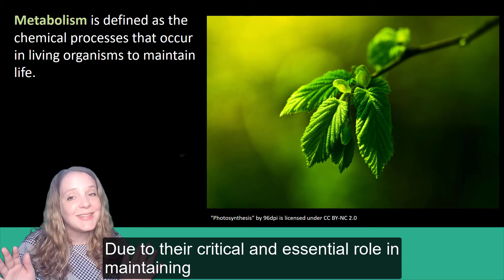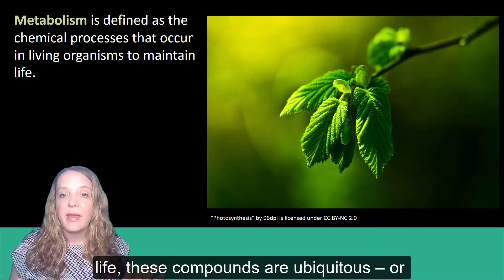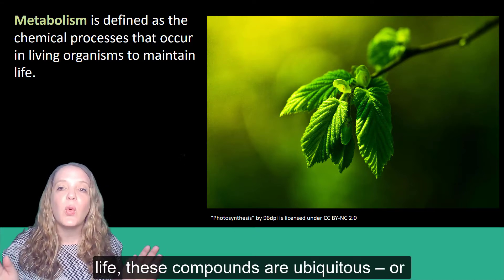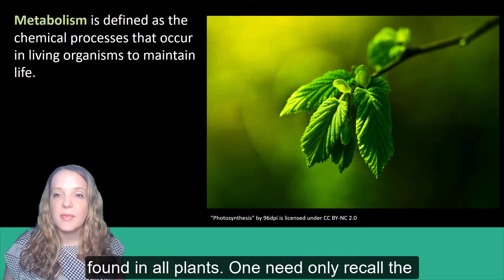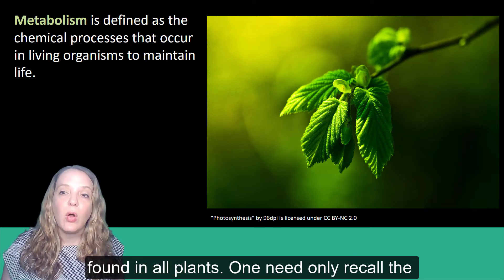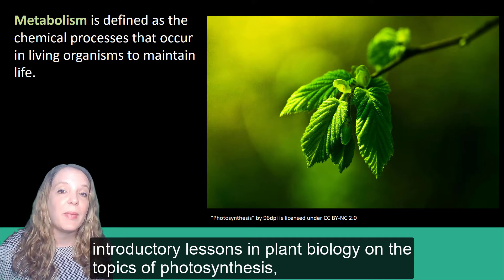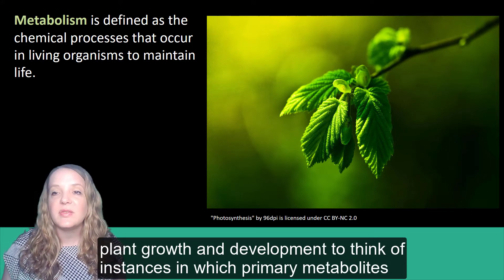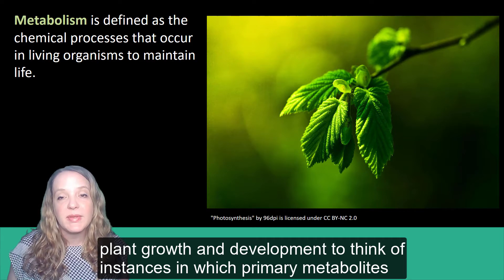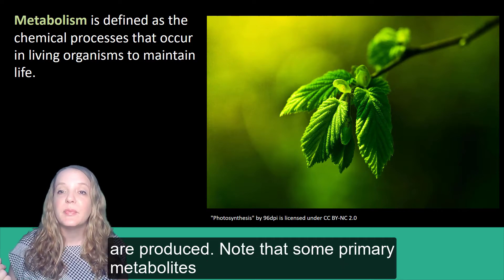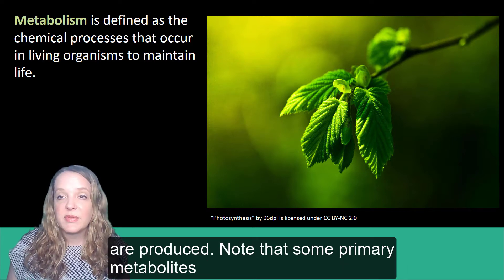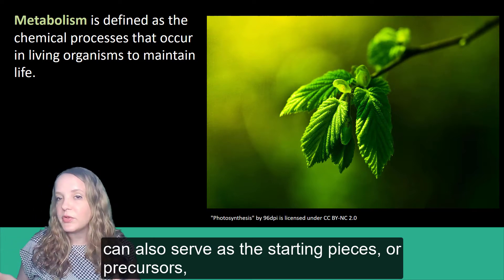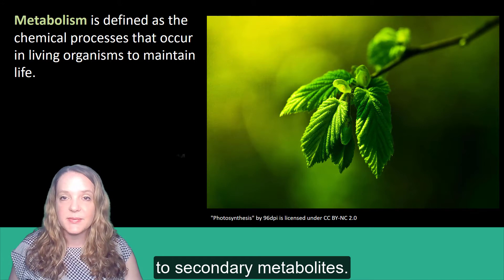Due to their critical and essential role in maintaining life, these compounds are ubiquitous, or found in all plants. One need only recall the introductory lessons in plant biology and the topics of photosynthesis, plant growth, and development to think of instances in which primary metabolites are produced. Note that some primary metabolites can also serve as the starting pieces or precursors to secondary metabolites.